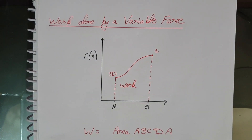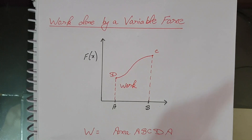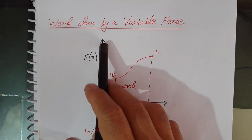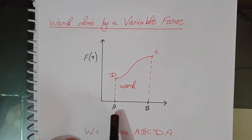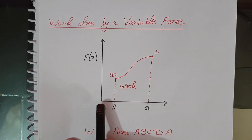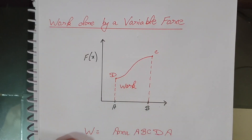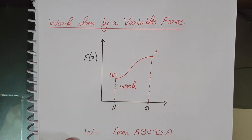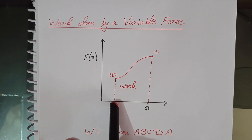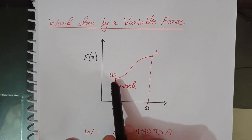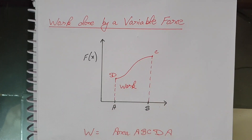Work done by a variable force. Now in this case the force is variable. If you draw the graph, you can see Fx on the y-axis representing the variable force, and the x-axis represents the distance. Here a and b represent the total displacement — the displacement from a to b. This graph represents the variable force.